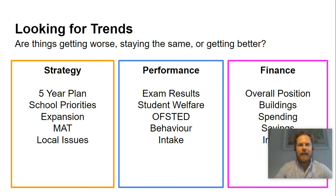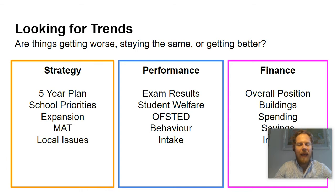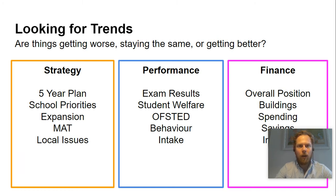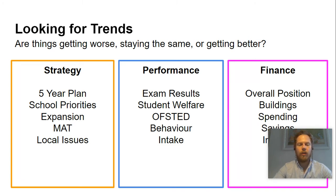So governors want to know: are things getting worse, staying the same or getting better in strategy? Is the five-year plan working? In performance — what are our exam results? What about student welfare? Are our behaviour strategies working? Have our exclusions gone up or down? How do we feel about how that's going? And finance, of course, as well — what are we spending money on? Are we getting good value for money, or are we not really spending it very well and not getting the best that we can for the students?